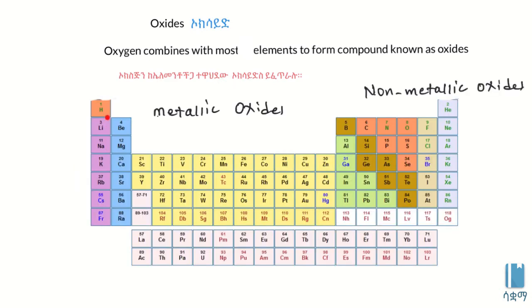Looking at the periodic table, the metallic elements are highlighted. Elements like lithium and others are metals that can form metallic oxides.